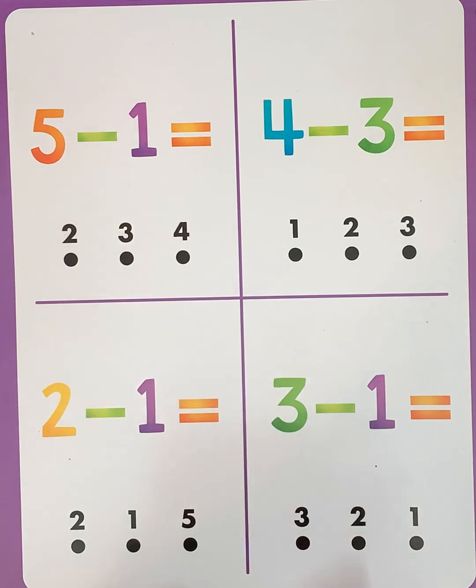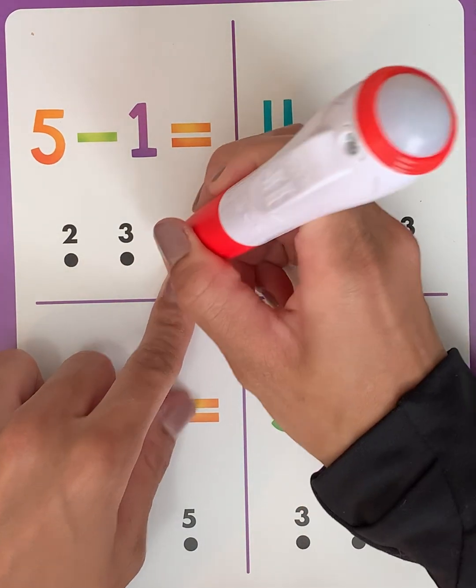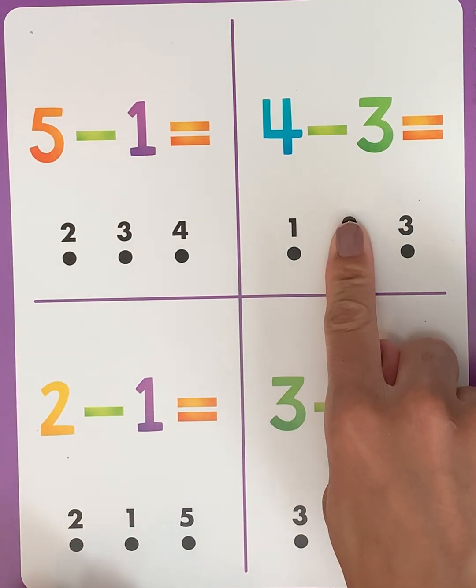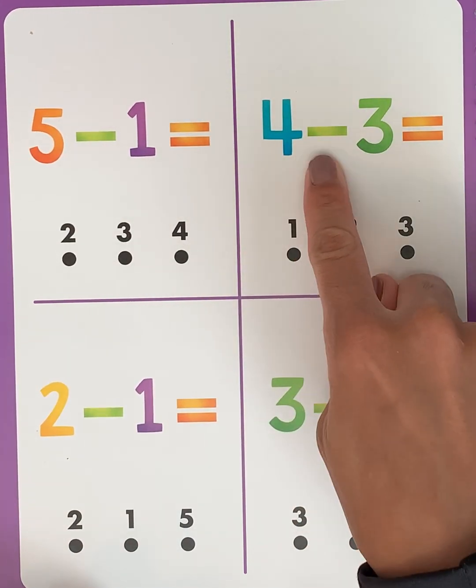So where is the number 4? Right over here, let's see if that's right. That's correct. Our next problem is 4 minus 3.